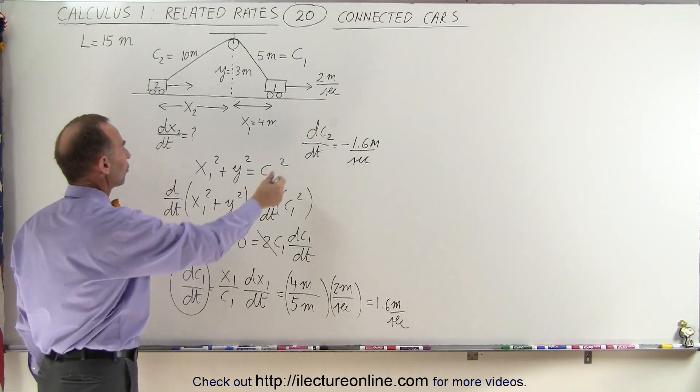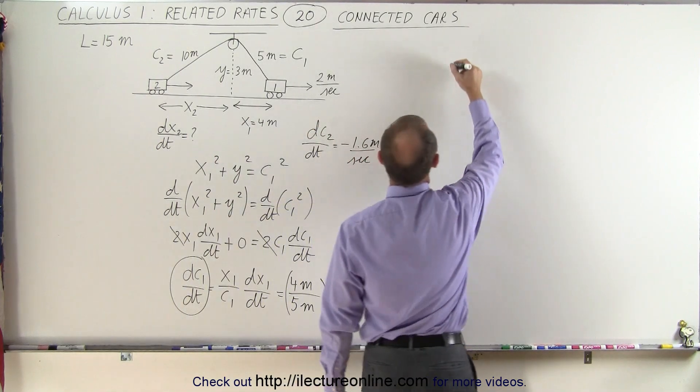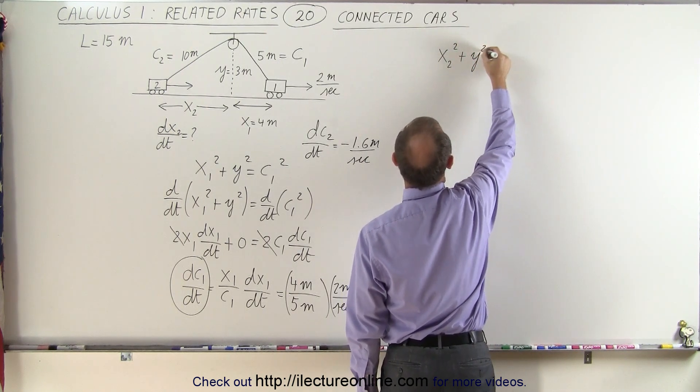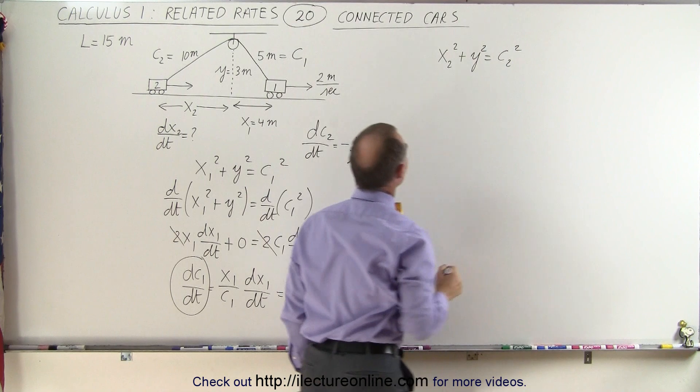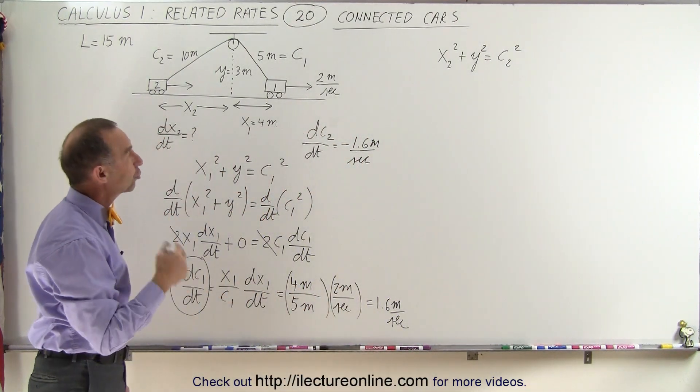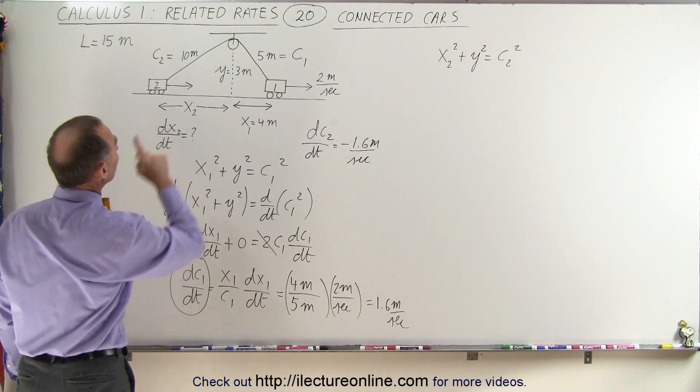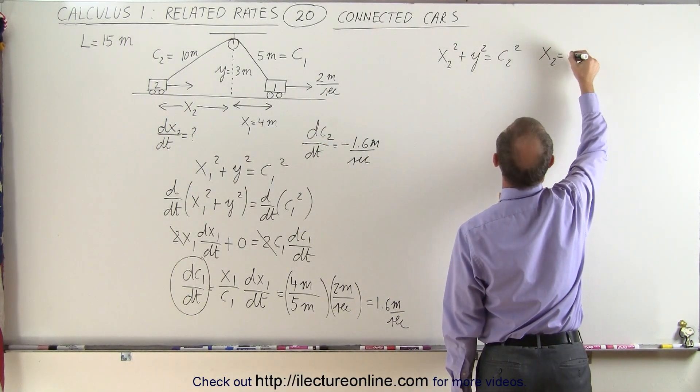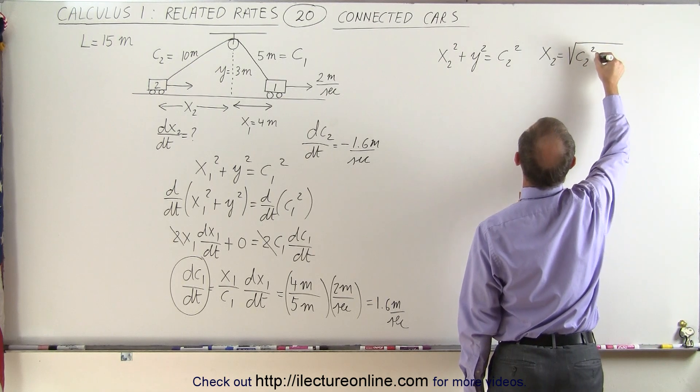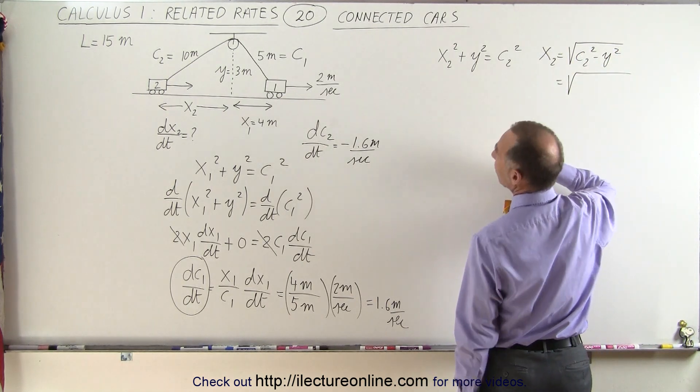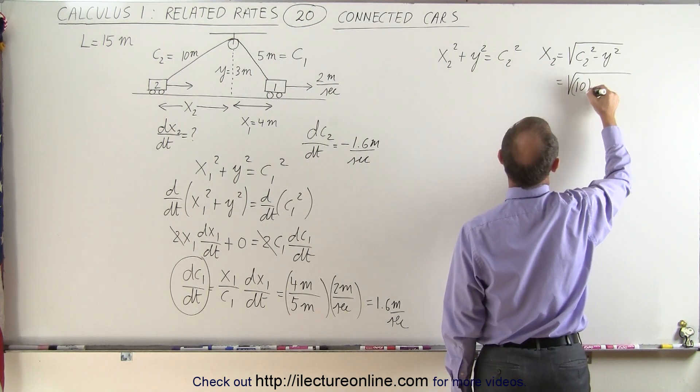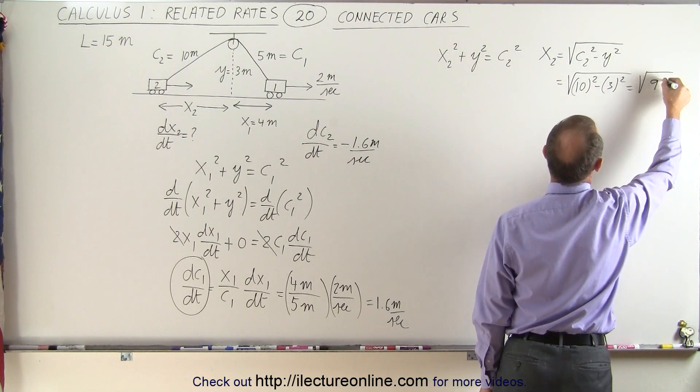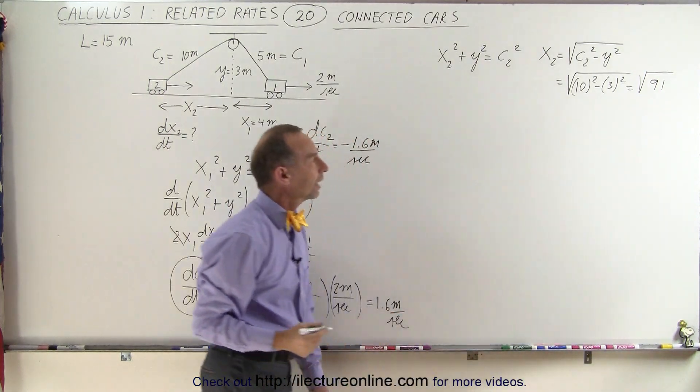Now we're going to take this equation and use it on the left triangle. So now we use x2 squared plus y squared is equal to c2 squared. Now there's one problem here since I'm going to need x2 I need to calculate x2. We know y, we know c2 so using that equation I can actually solve for x2. x2 is going to be equal to the square root of c2 squared minus y squared, which is equal to the square root of 10 squared minus 3 squared, which is equal to the square root of 100 minus 9, which is 91. And that's as good as it goes. So the square root of 91, we'll just leave it at that.